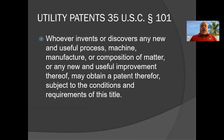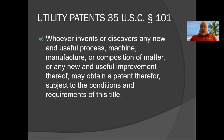Under the US Code, it states: whoever invents or discovers any new and useful process, machine, manufacturer, or composition of matter, or any new and useful improvement thereof, may obtain a patent, subject to the conditions and requirements of this title. So basically, if you've invented something that is new and falls under the category of a process, a machine, a manufacturer, a way of making things, composition of matter, material science, or any new and useful improvement of any of the above, you can patent it.